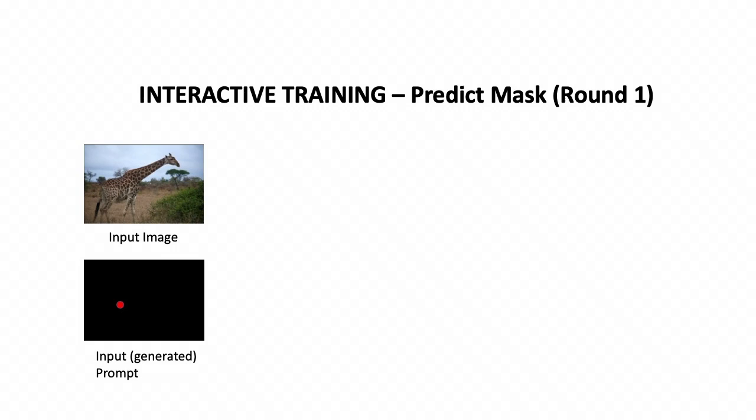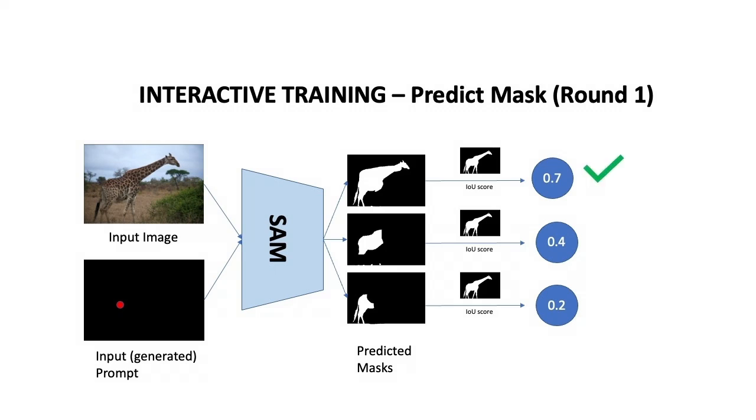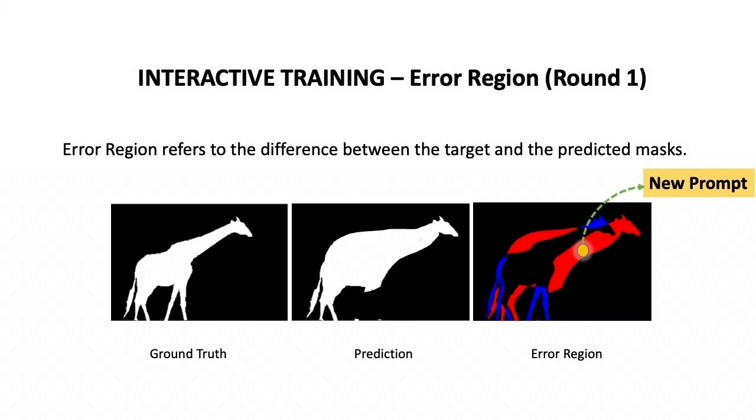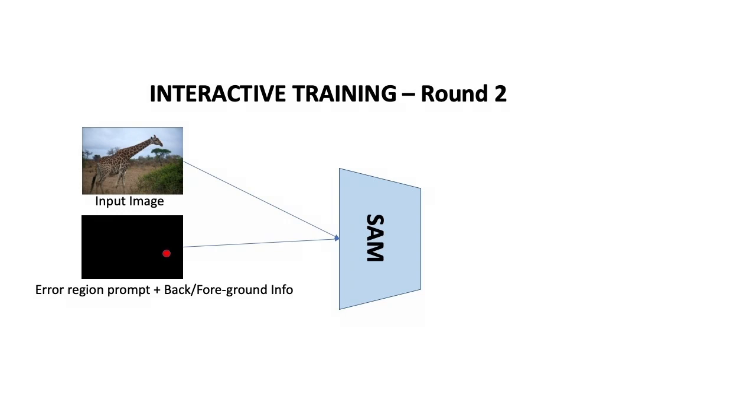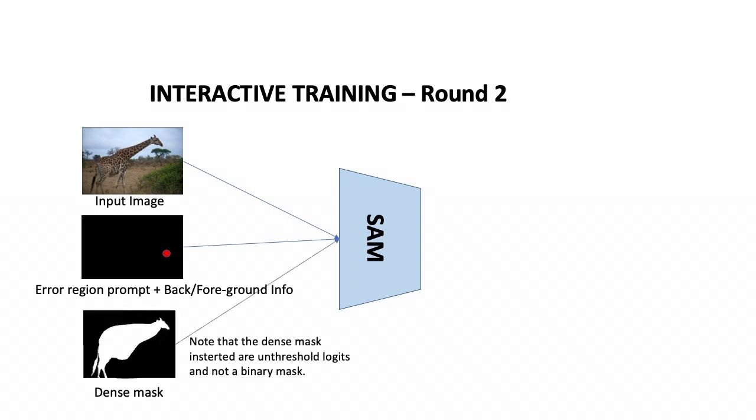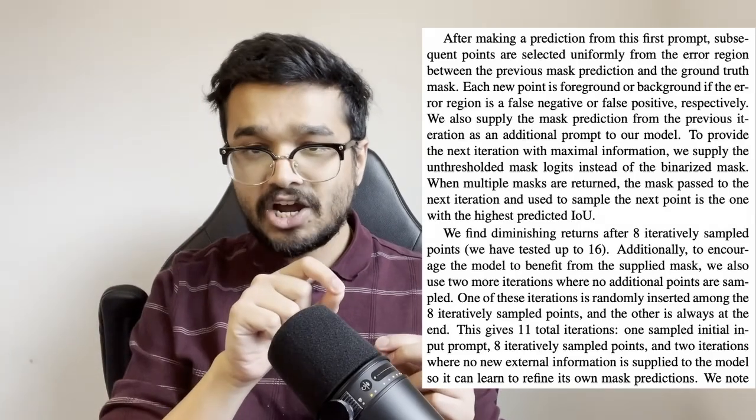Next they feed forward the image and the random prompt through the network and output the three masks. For the mask that has the highest IOU they extract its error region. A new point is now sampled from this error region randomly and re-input it into the network as a new point prompt. If the new sampled point is from a false positive region the prompt is inputted as a background point and if it's from a false negative region it is inputted as a foreground point. In the second round along with passing in this newly sampled point prompt they also crucially pass the best mask outputted by the network in round one as a dense prompt and then predict a new mask for round two. This loop of sampling new points, generating a new mask and feeding it back in in the next round as a dense prompt continues for a number of rounds as mentioned here. Each iteration guides the model towards better segmentations by constantly feeding in the previous outputs as a dense guiding signal to improve the next predicted mask.